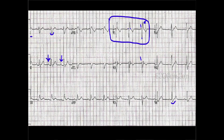Remember that in right bundle branch block, the T wave points opposite the extra right ventricular wave. In V1, it's negative, and in lead 1, where the extra wave goes down, the T wave goes up — that's normal. If you see the opposite, that can be abnormal. Also remember the ST segments belong to the left ventricle, not the right, so you can use them to screen for STEMI. In this case, this young man is healthy with no symptoms and no STEMI. That's it for today's ECG training.